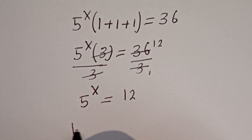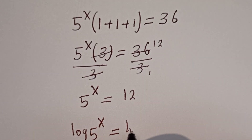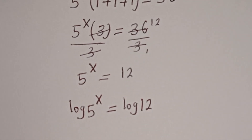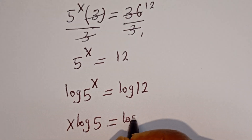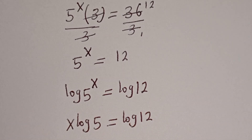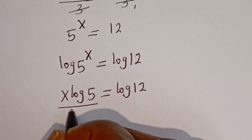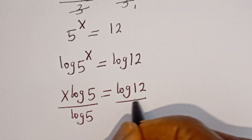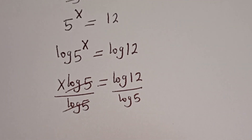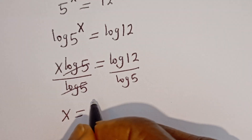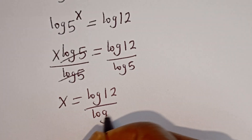Let's take the log of both sides. We have log of 5 to the power of X is equal to log 12. Using the power rule, we have X times log 5 is equal to log 12. Now we divide both sides of this equation by log 5 — this will cancel log 5 — giving us X is equal to log 12 divided by log 5.